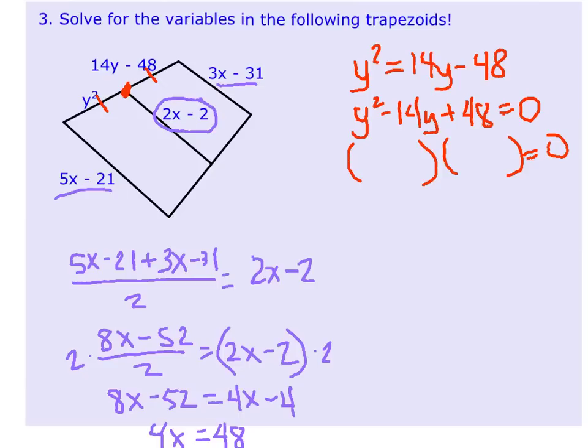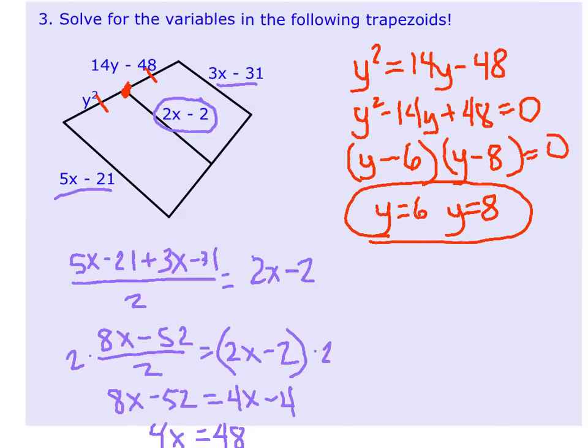Then we're going to factor. So what two numbers multiply to 48 and add to negative 14? So I know it has to be two negative numbers. And if you guessed negative 6 and negative 8, you would be correct. Negative 6 times negative 8 is 48, and when you add them, you get negative 14. So now we get two answers: Y equals 6 and Y equals 8. And once again, we have to make sure that both of those answers make sense. So I'm going to go back over here and plug 6 and 8 in for Y. Either way, we get 36 and 64. So those numbers both make sense. I'm going to plug 6 in here for Y. 14 times 6 and subtract 48, and you get 36. And if you plug the 8 in for Y, 14 times 8 minus 48, you get 64. So this is a situation where both of these answers make sense. So you would actually give both of them as your answers.